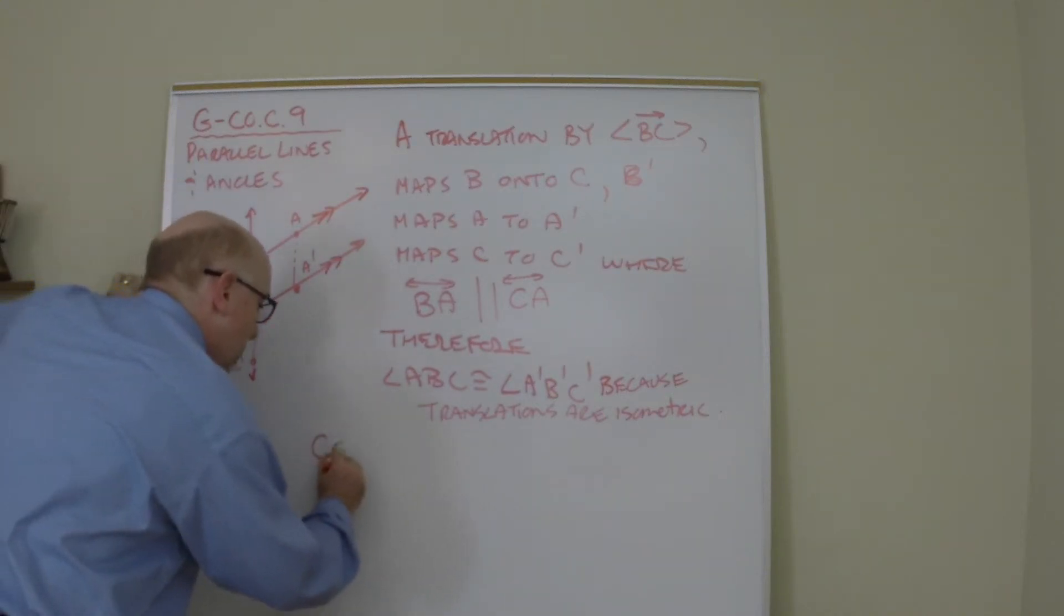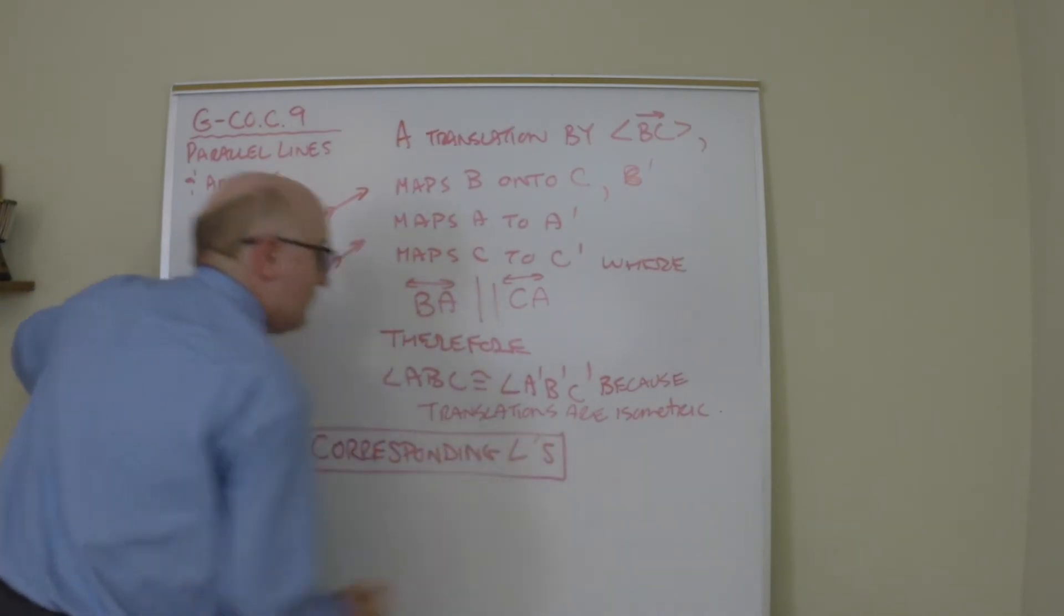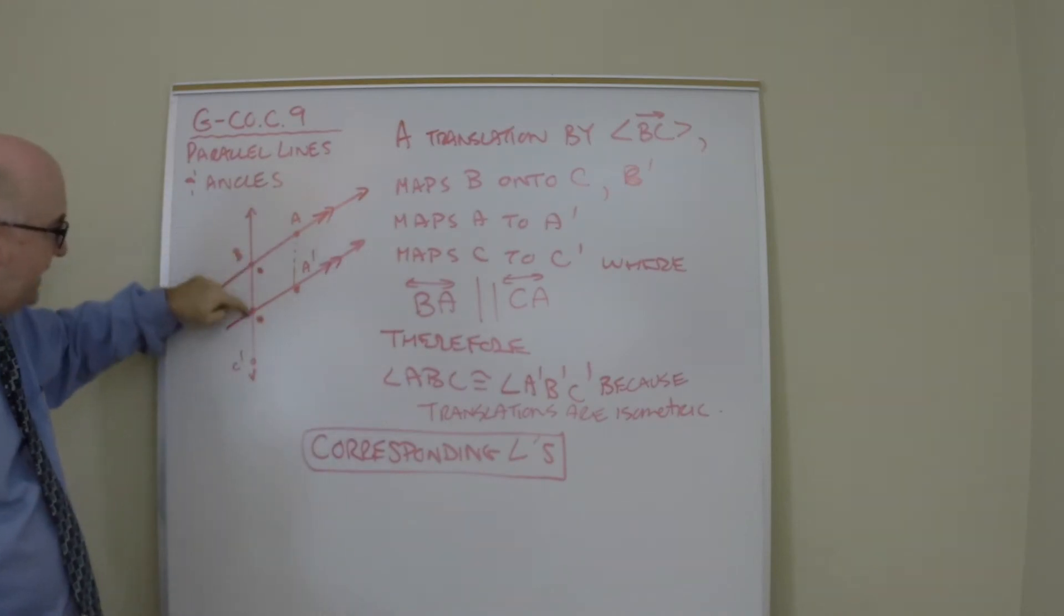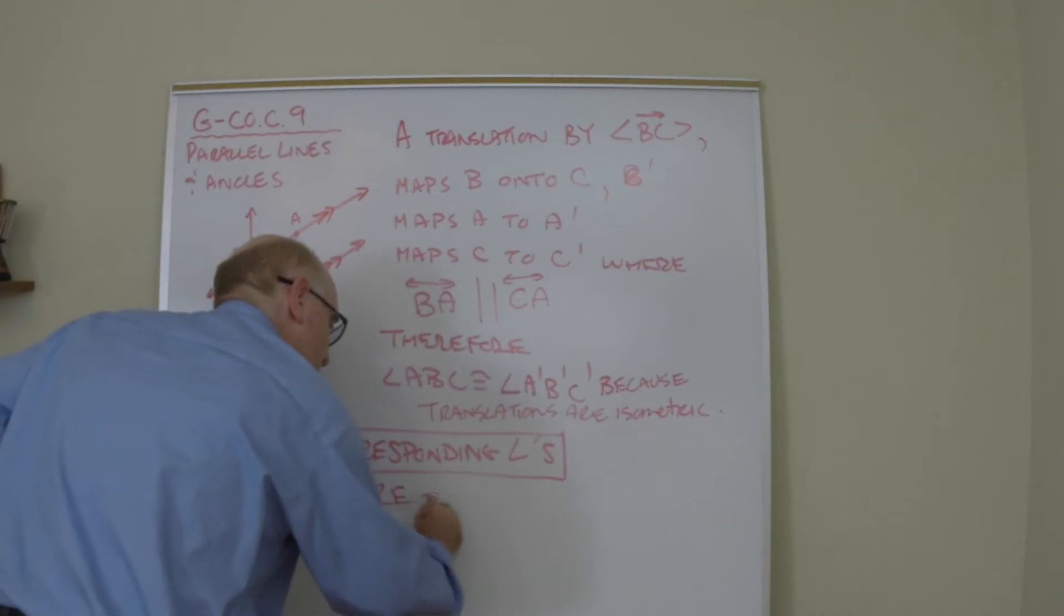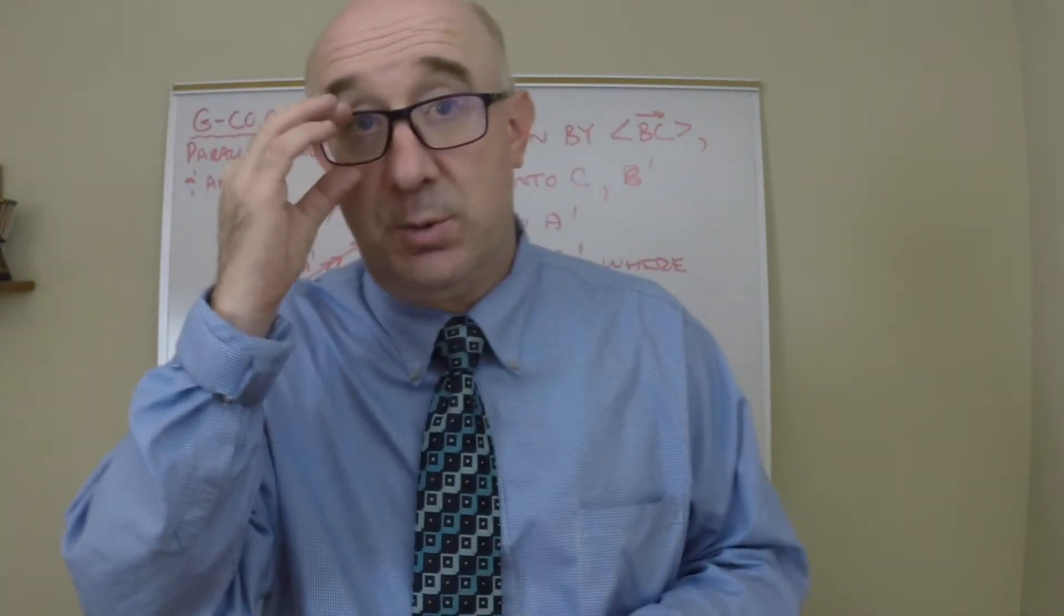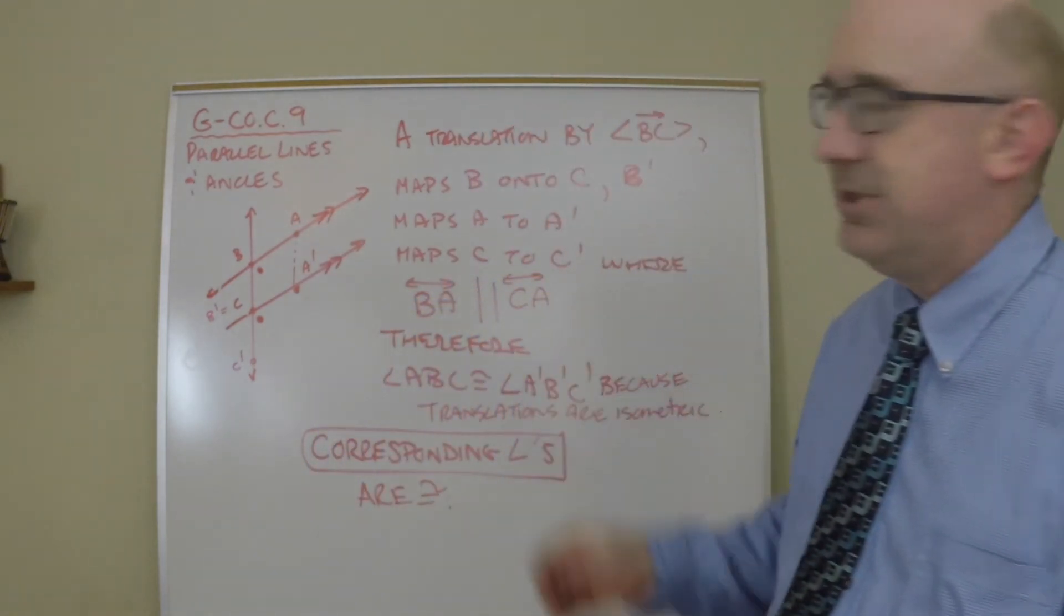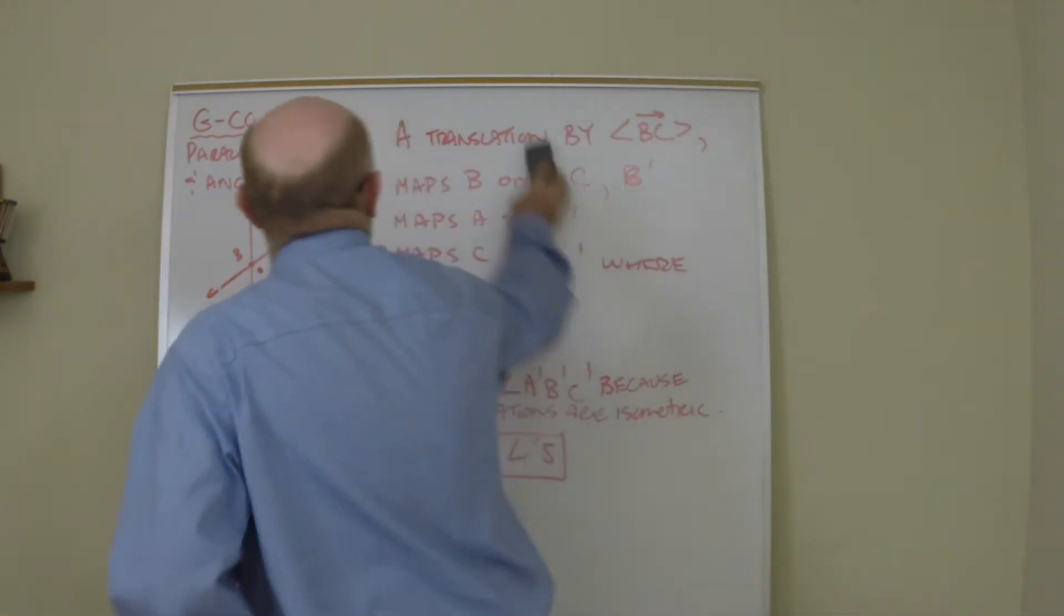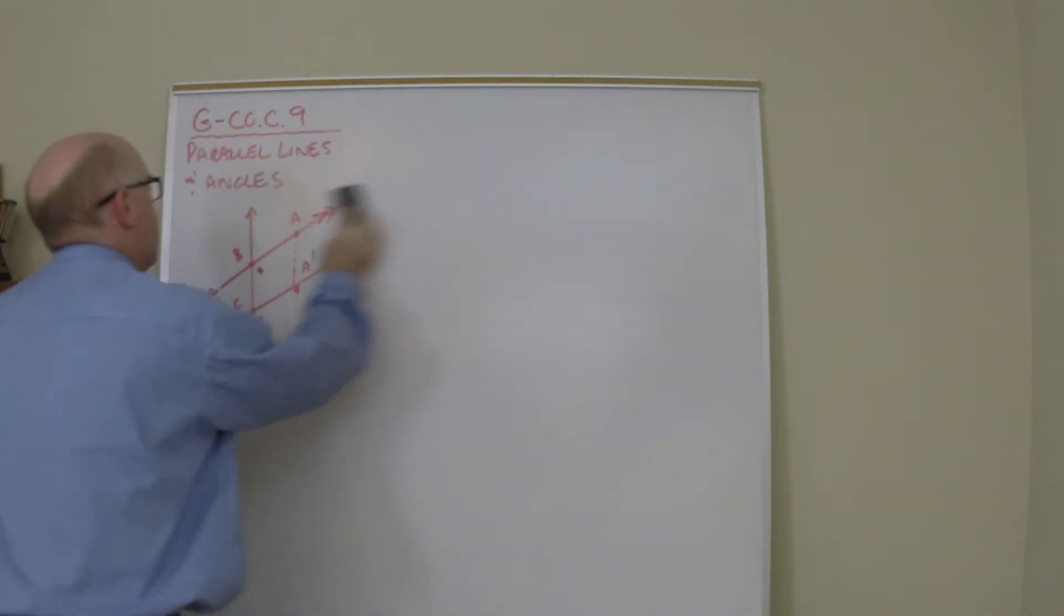Why is it congruent to its image? Because translations are isometric. When we perform a translation, we know that it's going to copy the angle into its new location. This angle must equal that translated angle because they are isometric. Let's give it a name. These kinds of angles, when we have parallel lines, are called corresponding angles. We've established that ABC will always equal its image angle, so corresponding angles are always congruent.